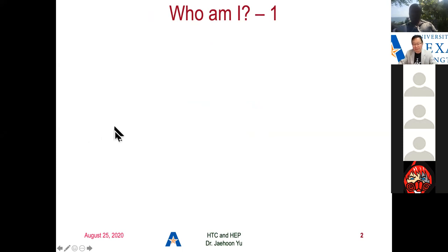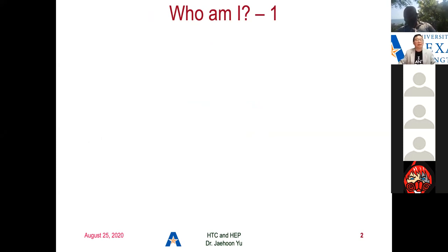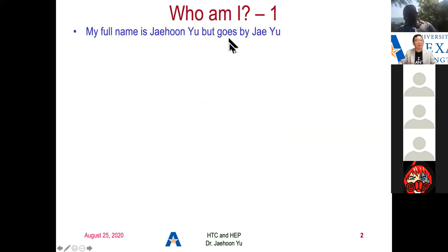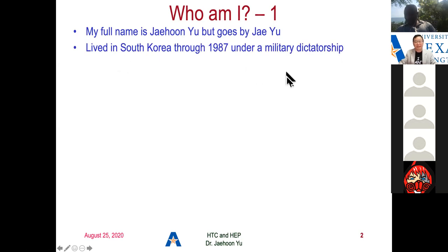So let me introduce myself. Basically there is no difference between me and you — it's just that I'm 25 years old and you're maybe 29, who knows. My full name is Jahoon Yu; it's very hard to pronounce for non-Korean people, so I shortened it to Ju. I lived in South Korea until 1987 — so I'm a South Korean-born American — under a military dictatorship, and I never got out until I left.